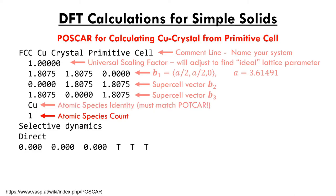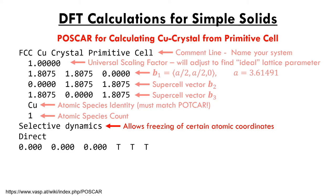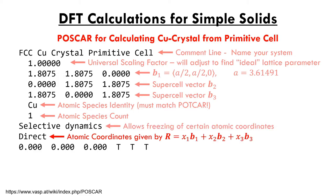The line beneath the atom types specifies the number of each type of atom, corresponding to the order in which they appear. For example, if you had one copper atom and two oxygen atoms, you'd write 'Cu O' on line six and '1 2' on line seven, then list the copper coordinate first, followed by the two oxygen coordinates. The eighth line tells VASP whether to allow certain atoms to move, requiring true/false flags for each Cartesian direction added at the end of the coordinate line.